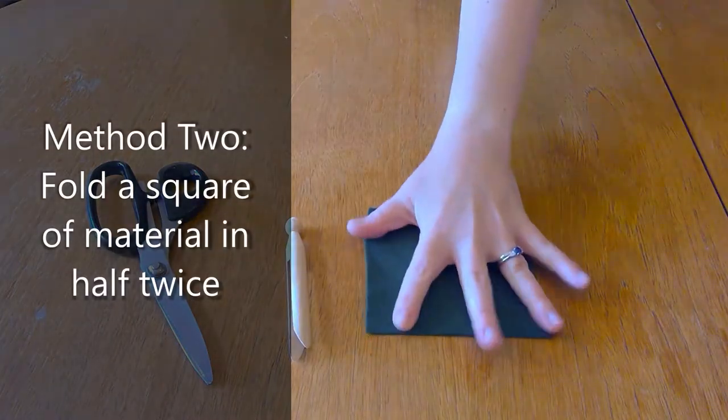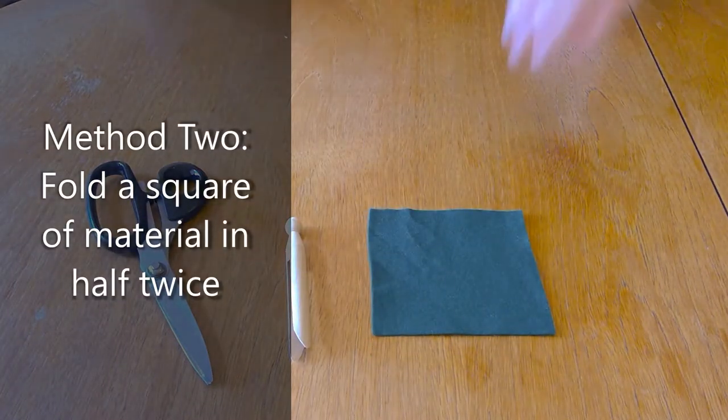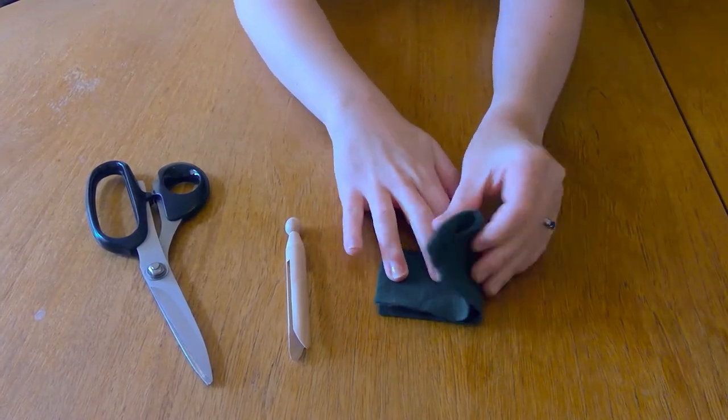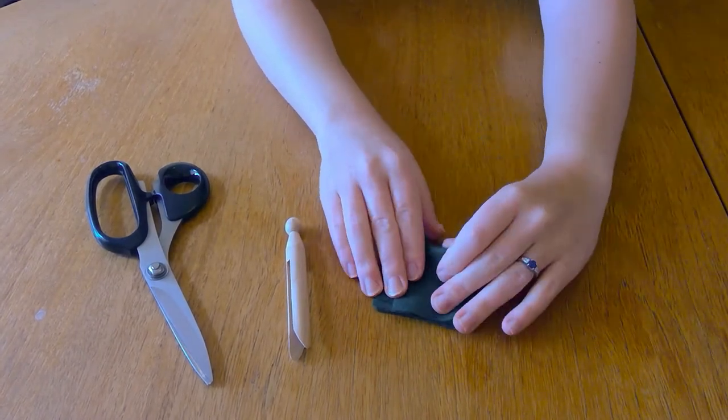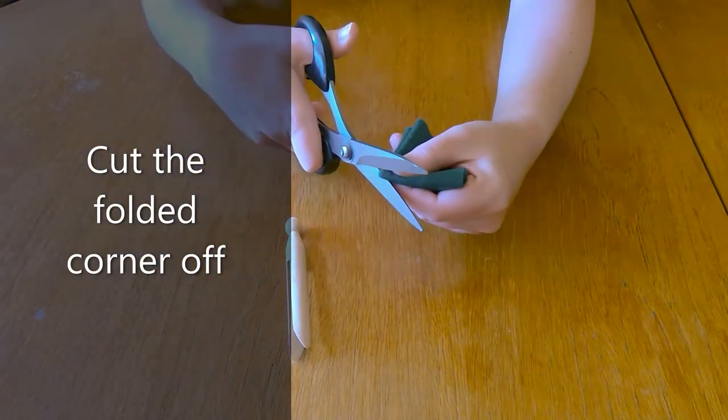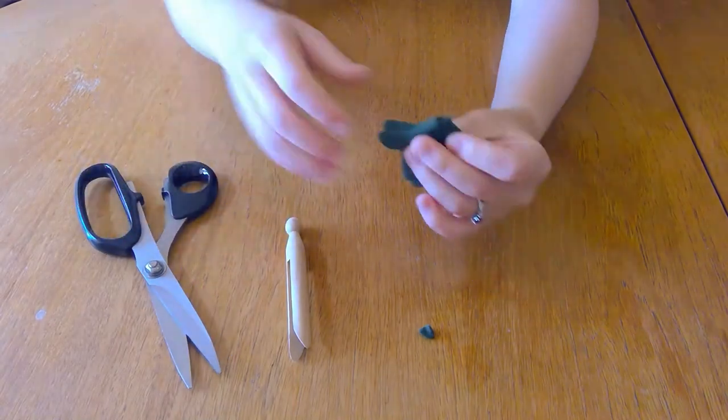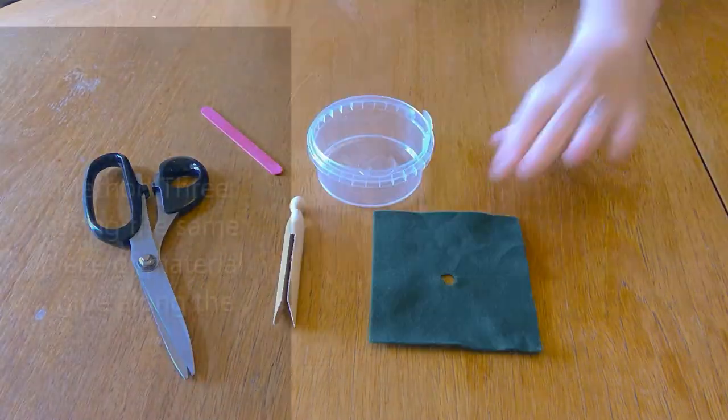For the second method I'm going to fold a square of material in half and then fold it in half again. I'm then going to take the folded corner and cut that off. That's going to give me a small hole in my material that I can then use to put over the head of your peg doll for some clothes.